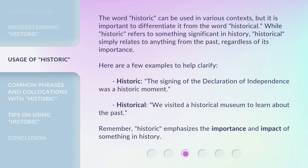The word 'historic' can be used in various contexts, but it is important to differentiate it from the word 'historical.' While 'historic' refers to something significant in history, 'historical' simply relates to anything from the past, regardless of its importance. Here are a few examples to help clarify. Historic: the signing of the Declaration of Independence was a historic moment. Historical: we visited a historical museum to learn about the past. Remember, 'historic' emphasizes the importance and impact of something in history.